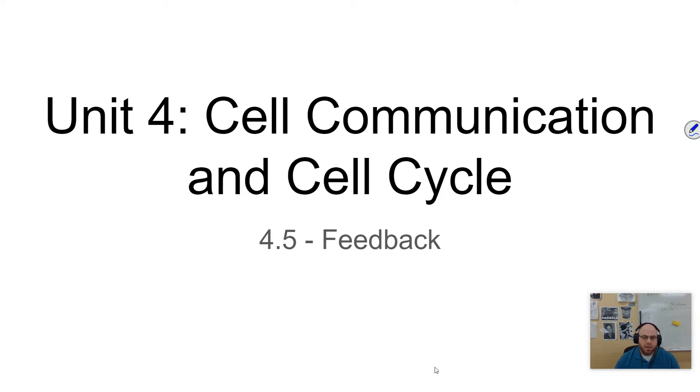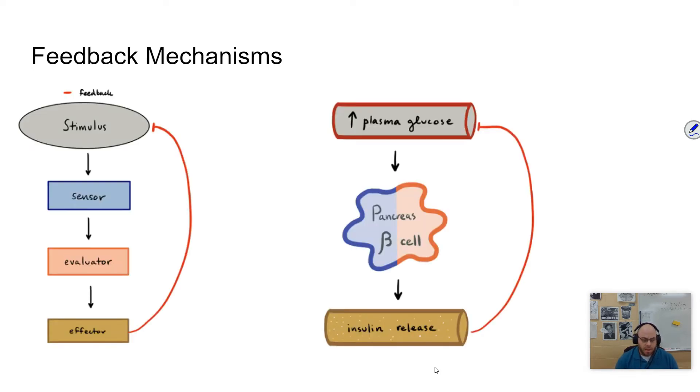The way to think about feedback is that there's a product that is being made, that cellular response. And then that product is going to cause a further reaction. So the product is either going to cause the whole thing to be shut down or it's going to cause the whole thing to be made more of. And so we're going to look at two examples of feedback mechanisms.